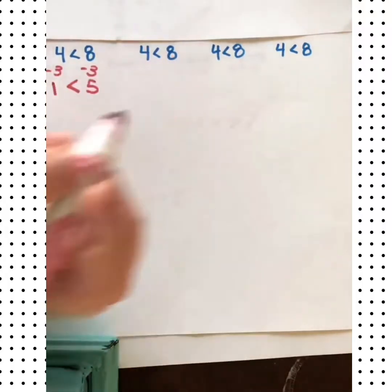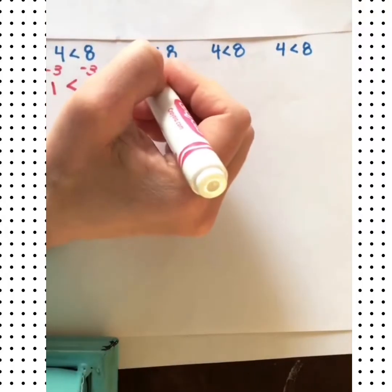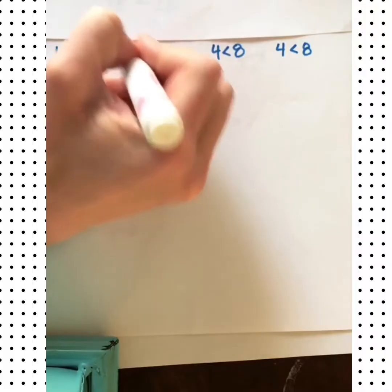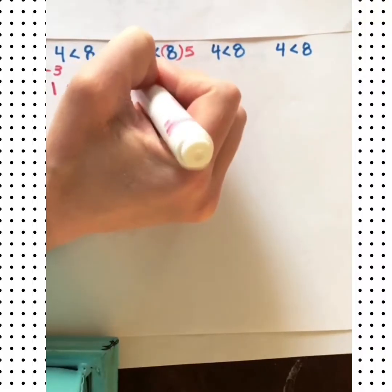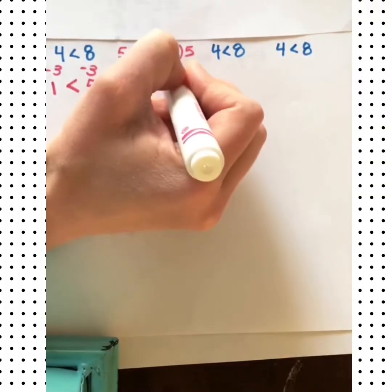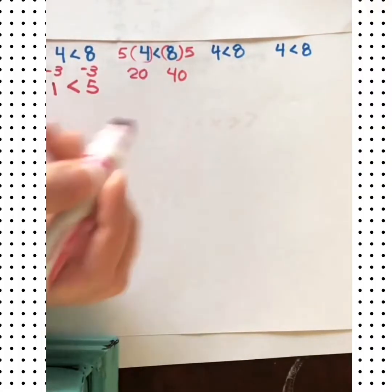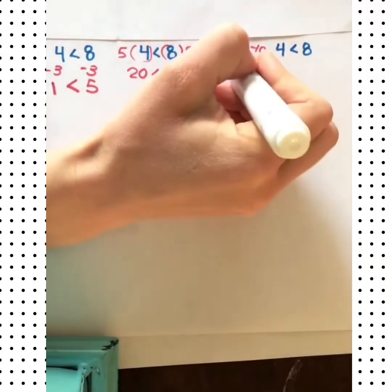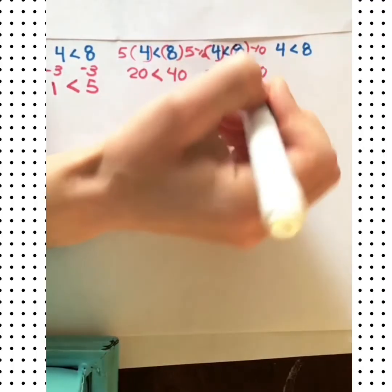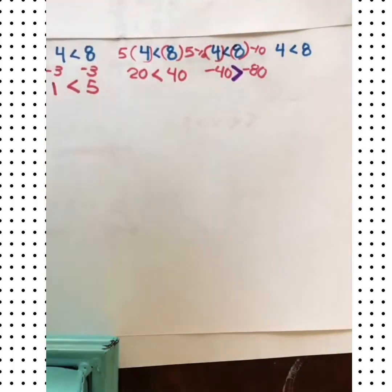Now let's multiply both sides by 5. 5 times 4 is 20. 8 times 5 is 40. Is the sign still the same? Yes, 20 is still less than 40. All right, let's multiply both sides by negative 10. Negative 40 is less than negative 80. No, it is not. So we have to flip this sign around. Negative 40 is greater than negative 80. So it's important to notice what happened there and that's going to help us solve in a minute.